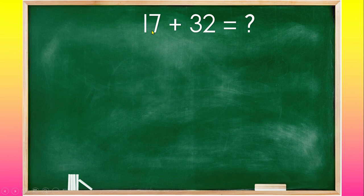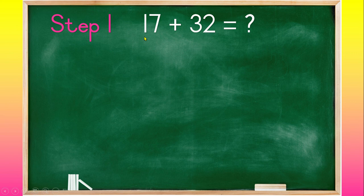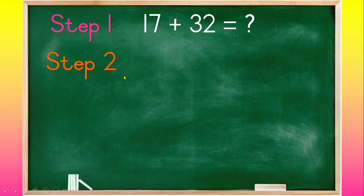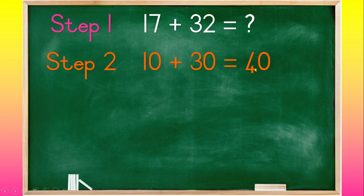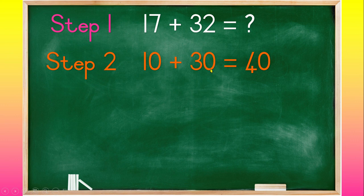Now, here I have 17 plus 32. So our first step is to look at the sum. 17 is one ten, so it's 10, and there's 7 ones. And then we have 30, which is 3 tens, and 2 ones. Step 2 is to add the tens. So it's 10 plus 30, and that gives us 40, because 1 plus 3 is 4. Then we add the 0, which is 40.